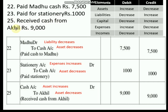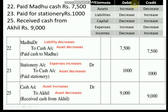Next transaction: received cash from Ahil. Cash is the first element — cash is received, so the asset is increasing; when an asset increases, it should be debited, so cash is debited. Ahil was a debtor — a person who owes money to the business. When Ahil pays the money, the debtor asset is decreasing; when an asset decreases, it should be credited, so Ahil is credited. Journal entry: Cash account Dr. to Ahil account.